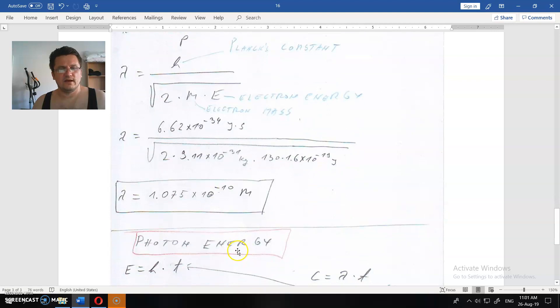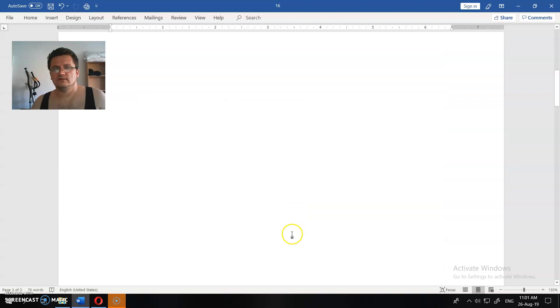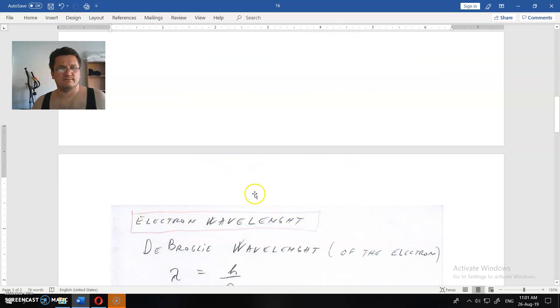Now, photon energy. The second part of the solution was to calculate photon energy. What is the energy of the photon with the same wavelength as the electron above?